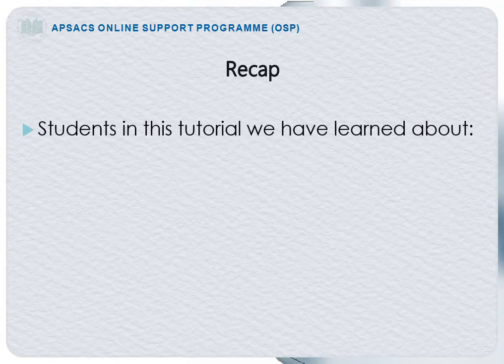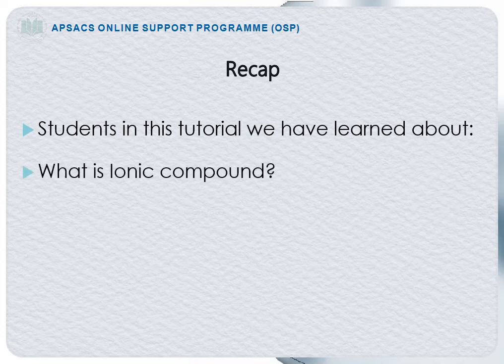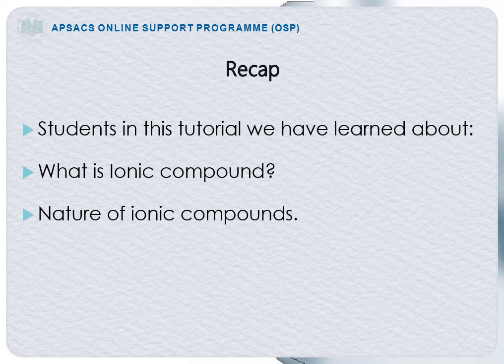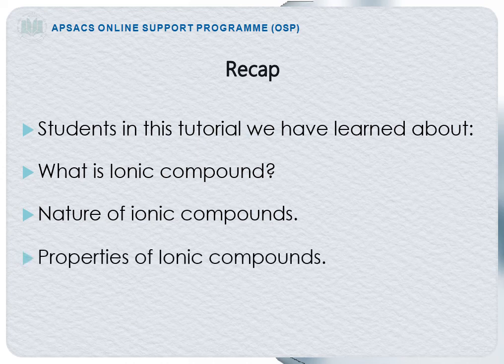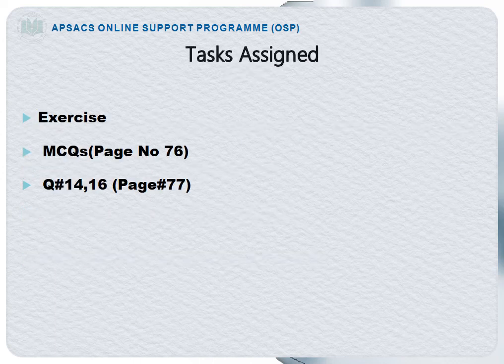Recap: In this tutorial, we have learned that ionic compounds consist of ions joined by electrostatic forces. Ionic compounds are crystalline solids at room temperature with high melting points — for example, sodium chloride has a melting point of 801 degrees centigrade. Ionic compounds can conduct electricity in the molten state. Tasks: Solve MCQs on page 76, and write question numbers 14 and 16 from page 77 in your neat copy.